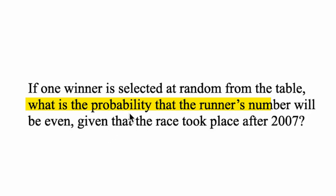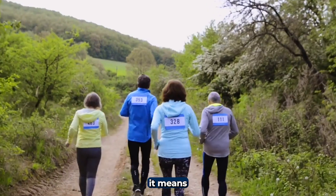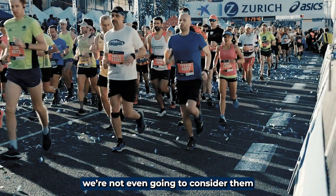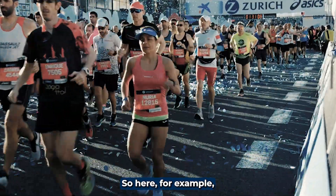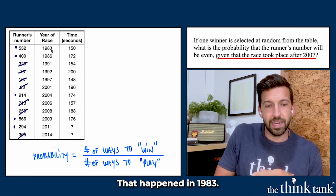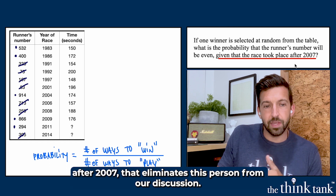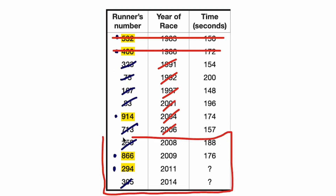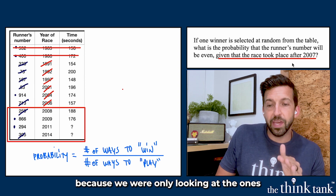But there's something super important here. It says: what's the probability that the runner's number will be even given that the race took place after 2007? That 'given' part means we're only looking at people who raced after 2007. If somebody raced before 2007, we're not even going to consider them. For example, 532 is even and seems like a winner, but that happened in 1983 — not after 2007. So that eliminates this person from our discussion altogether. Same with the other entry before 2007.